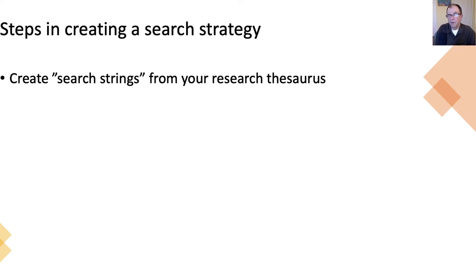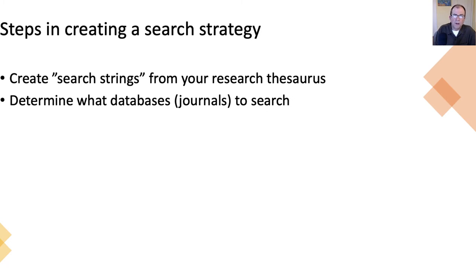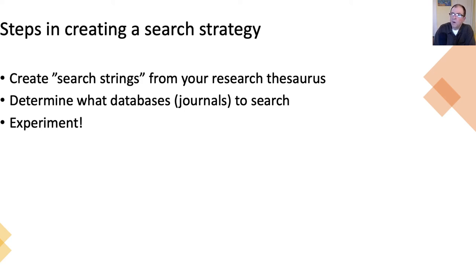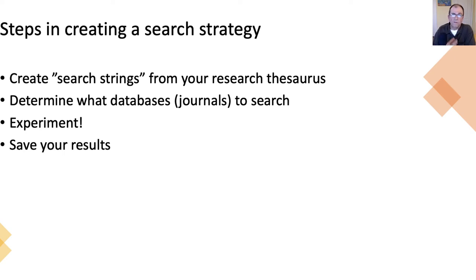We've already touched on how you might do that. Then you might determine what databases or individual journals you want to run your search in. You can experiment — you don't have to limit yourself to just one thing in one database, and I encourage you not to do that. Sometimes people think they're going to break the database — you won't. Feel free to experiment and try out different things. You may even want to run a few series of experimental search strings before you get into your main search — that's probably not a bad idea. And then save your results, because if you don't save your results, you'll lose them.